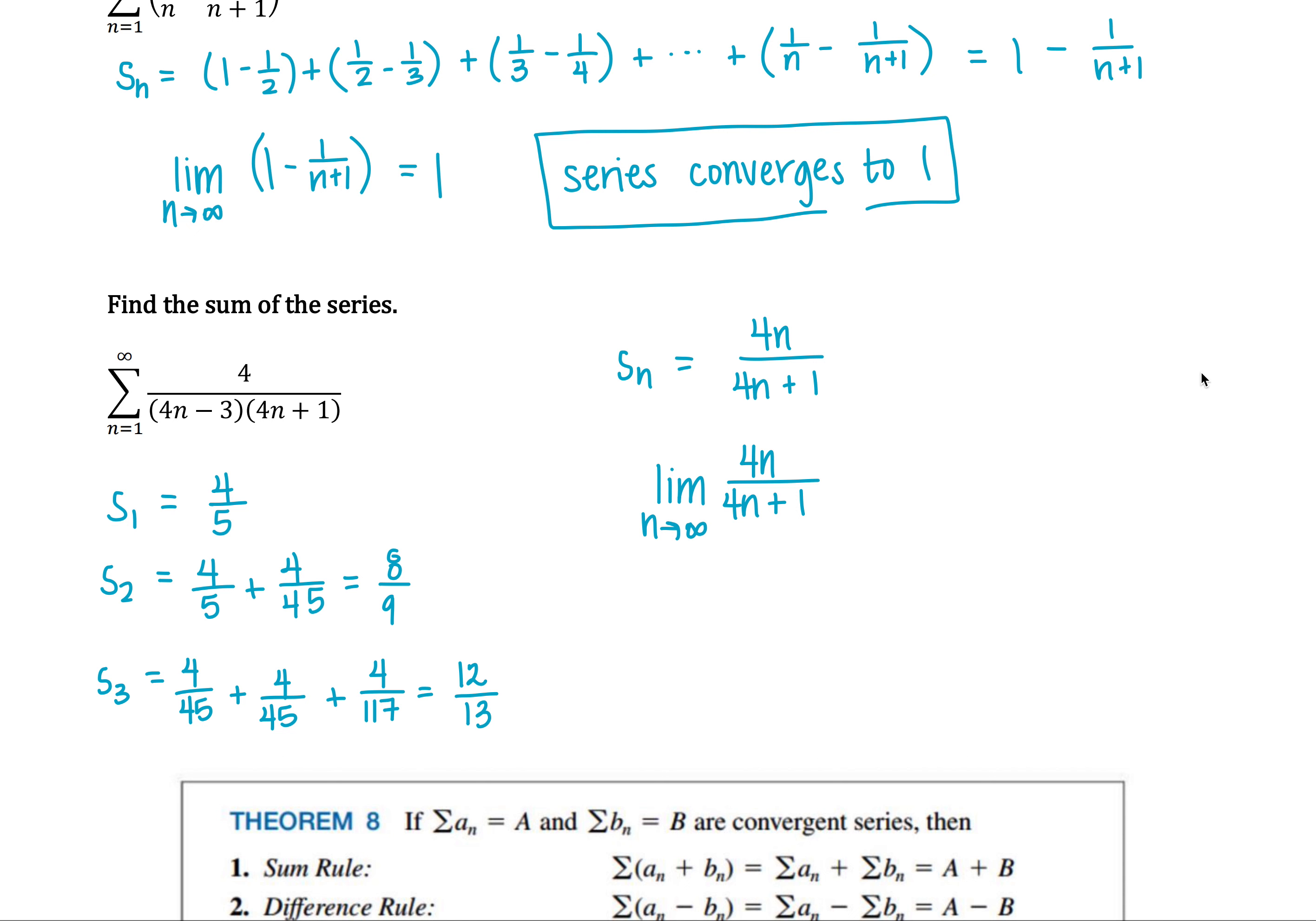I'm going to divide through all these terms, divide them through by n. So that's going to give me the limit as n goes to infinity of 4 over 4 plus 1 over n.